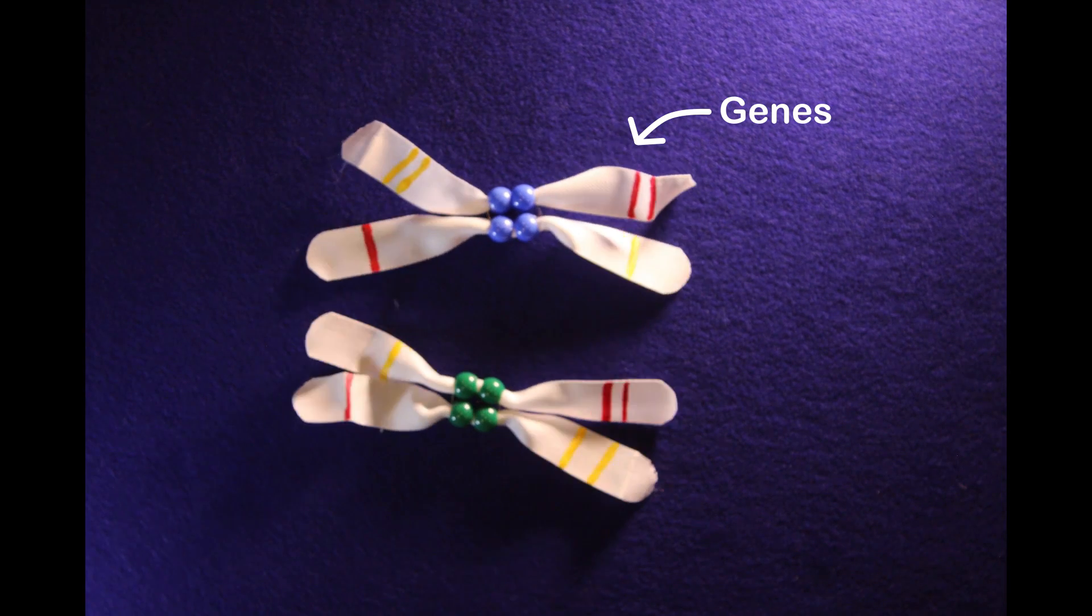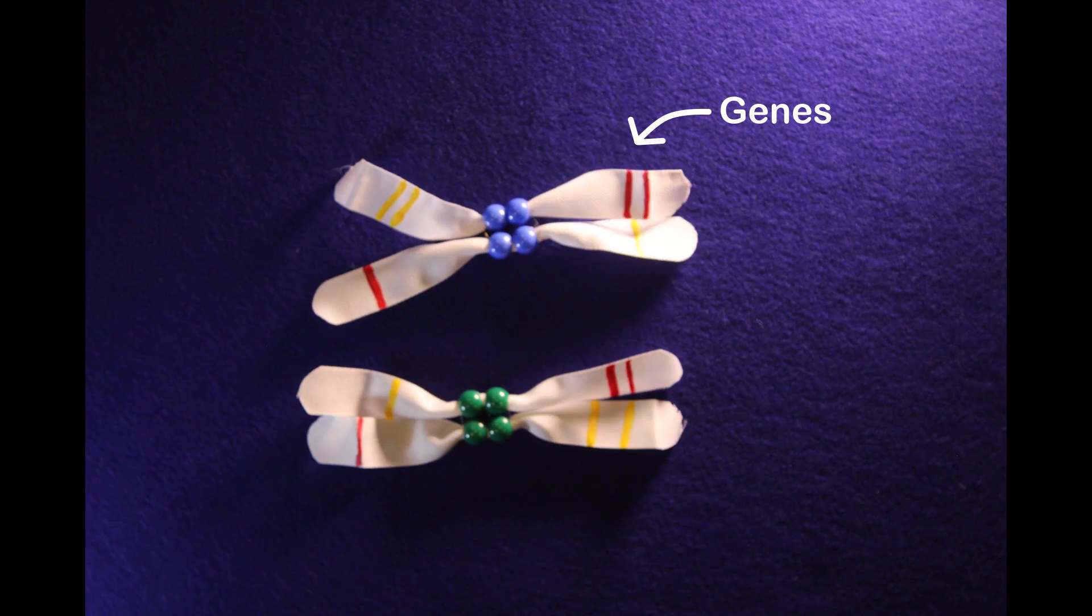When chromosomes from two different parents come together, they are bound by a structure called the centromere.